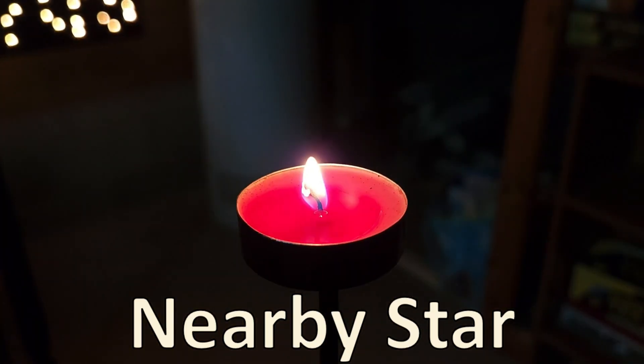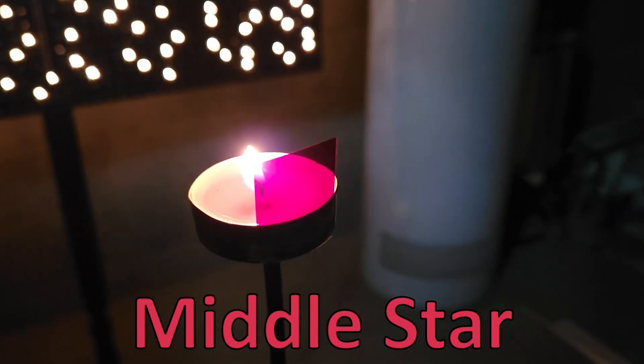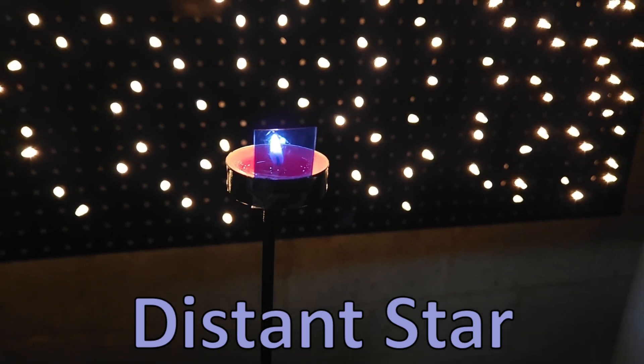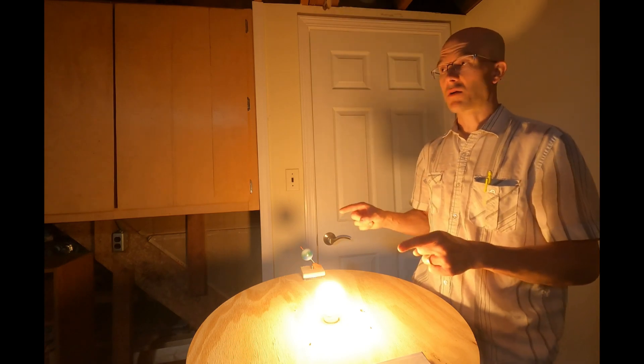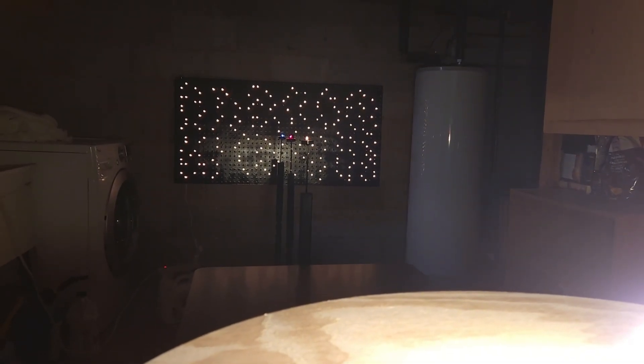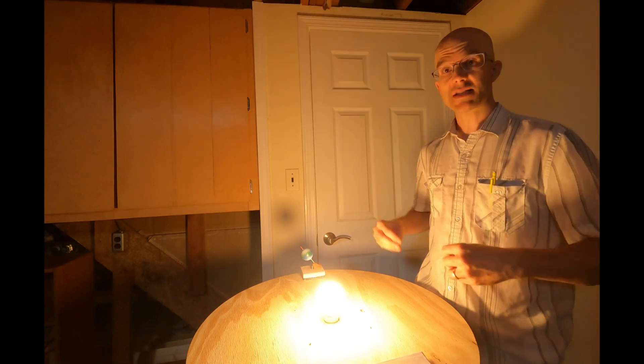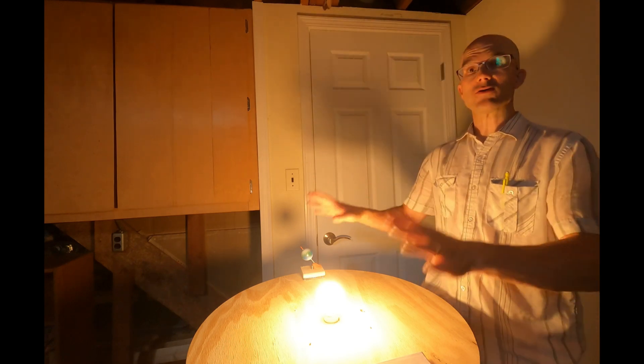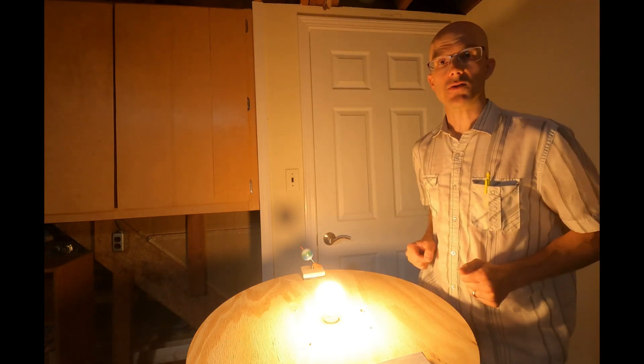We have a yellow nearby star, we have a red middle star, and then we have a blue distant star. And these Christmas lights that I've strung through this black pegboard are our background stars. These stars are extremely distant from us, the observer. We're talking thousands or hundreds of thousands of light years away.